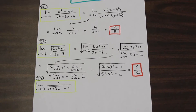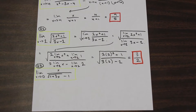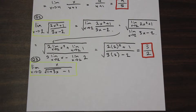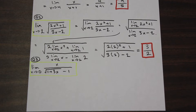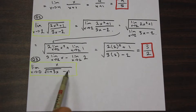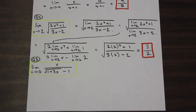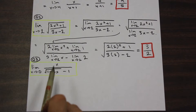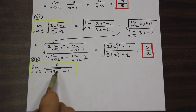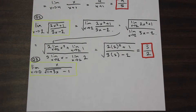Let's move on to the last question — this one is a bit trickier. We have the limit as x approaches zero of x over (root(1 plus 3x) minus one). If we plug in zero, the 3x goes away and we get root one minus one in the denominator, which is zero — we can't have that. Whenever you see a term in a root minus a number, think about multiplying by the conjugate to simplify.